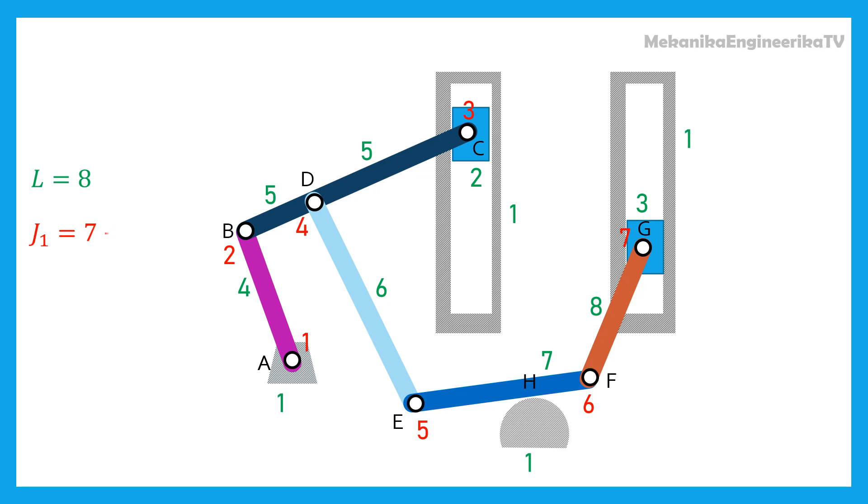There are 2 more translating or prismatic joints, connecting each slider to the ground. Thus, J1 is equal to 9. There are 9 kinematic pairs that each allow 1 degree of freedom.